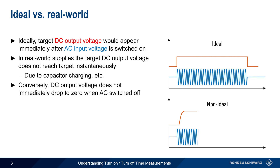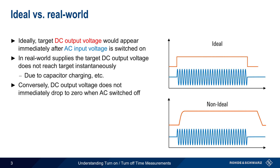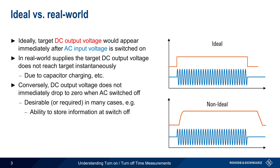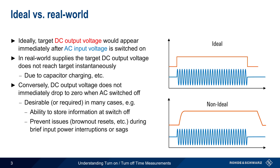Conversely, the DC output voltage does not drop immediately to zero when the AC input voltage is switched off. This is actually desirable or even required in some cases. For example, we may want the supply to provide power for a short period of time, even after the device is switched off, so that information or settings can be saved. This can also help prevent issues caused by brief input power interruptions, or SAGs.